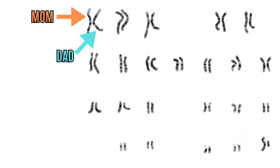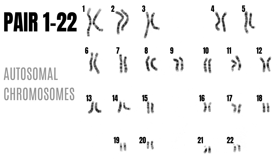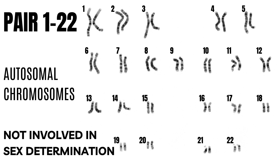Each pair of chromosomes has been inherited from our parents, meaning that one chromosome comes from the mother and the other from the father. Pairs 1 to 22 are referred to as autosomal chromosomes, meaning that they contain genes that are not responsible for determining the sex of the person.